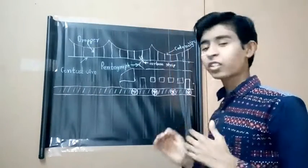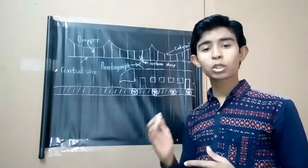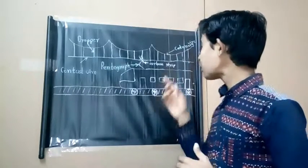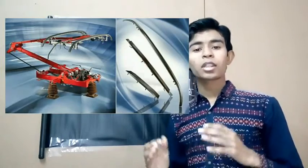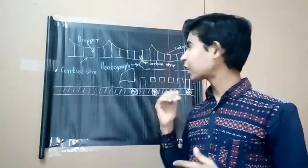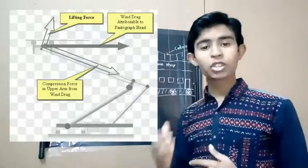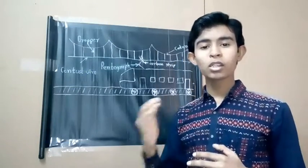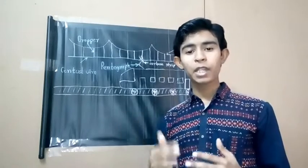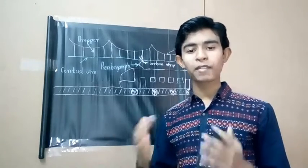The current collector pantograph transfers electricity from the catenary to the locomotive. The carbon fiber is attached to the upper side of the pantograph. It connects electricity to the catenary wire. The pantograph train system has permanent contact at any speed. The pantograph comes in all shapes and sizes depending on the speed of locomotive and power requirement.